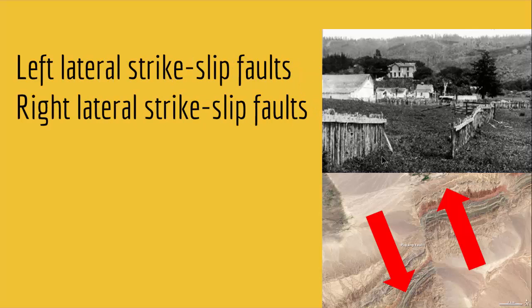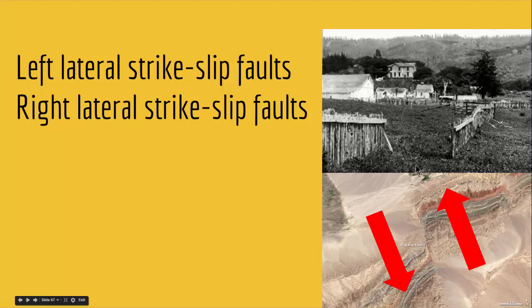We have two types of strike slip faults: left lateral and right lateral strike slip faults. In a left lateral strike slip fault, if you stand facing the fault, the opposite side has moved to your left. In a right lateral strike slip fault, if you stand facing the fault, the opposite side has moved to your right.